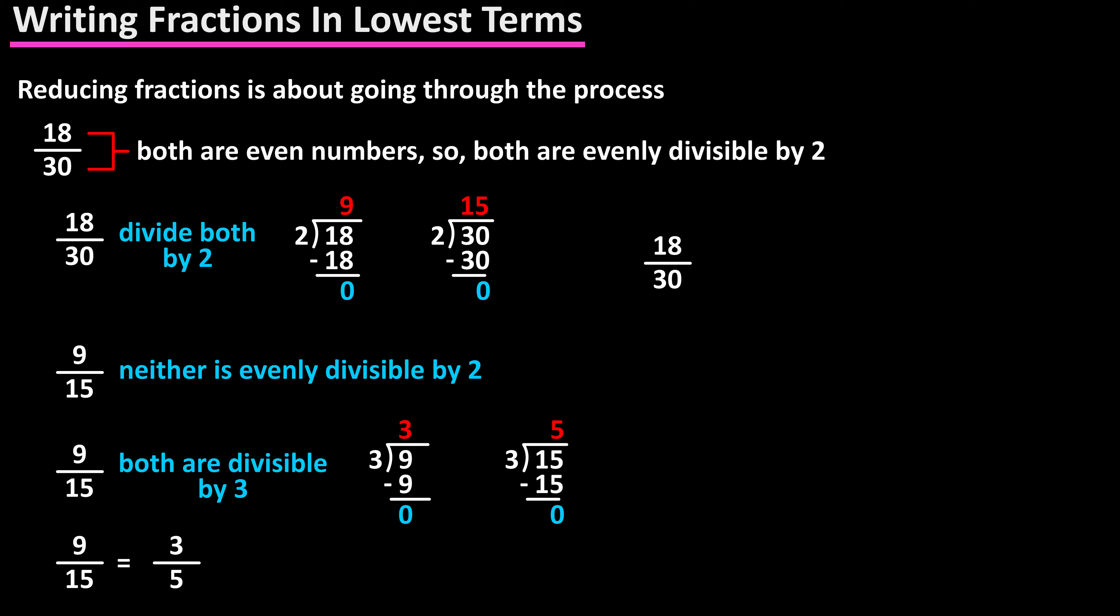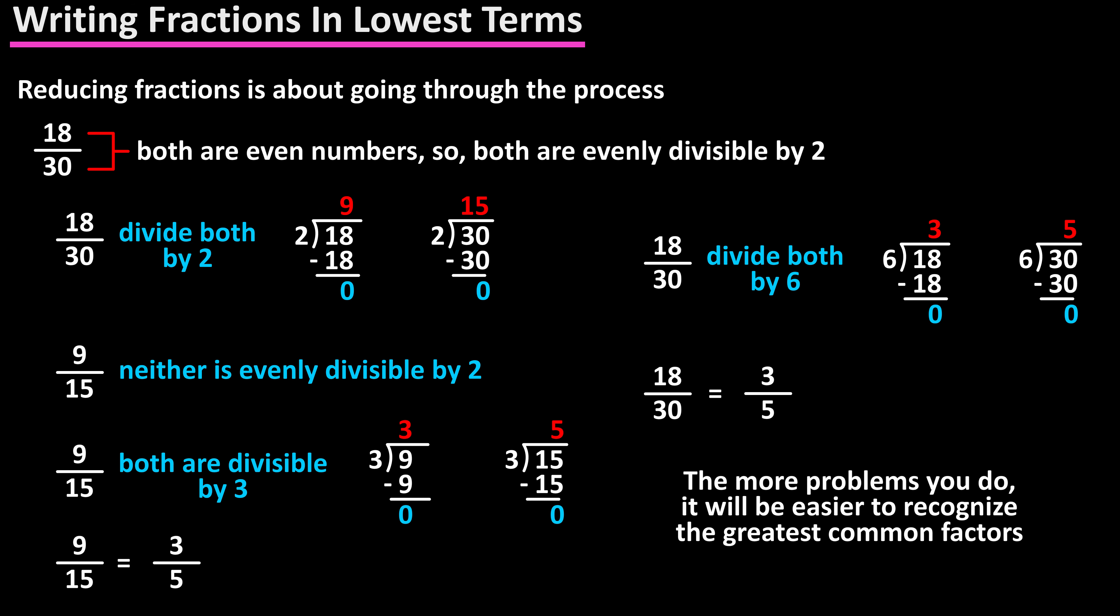If we go back to 18 over 30, both can be divided by 6, which results in 3 over 5. As you work more and more of these types of problems, you will be able to recognize the greatest common factors.